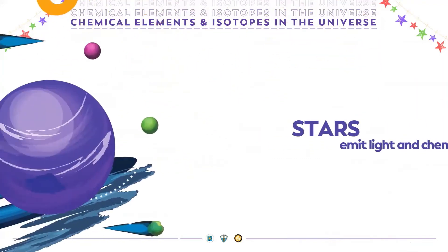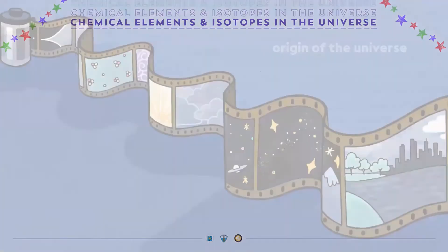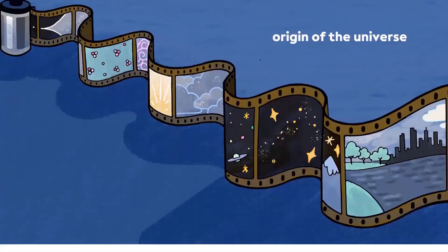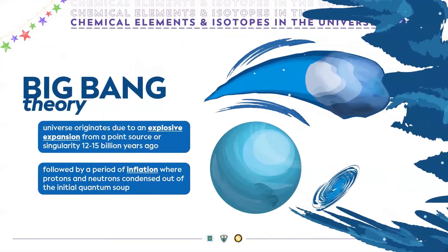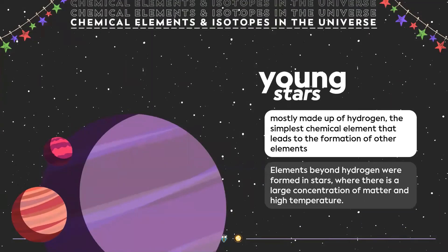The stars do not only emit light but also release chemicals. The Big Bang Theory explains that the universe originates due to an explosive expansion from a point source or singularity 12 billion years ago. It was then followed by a period of inflation where protons and neutrons condensed out of the initial quantum soup. A young star is mostly made up of hydrogen, the simplest chemical element that leads to the formation of other elements.